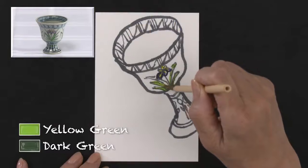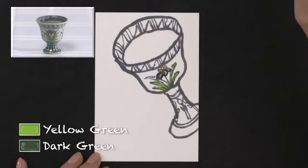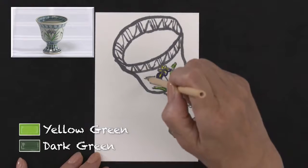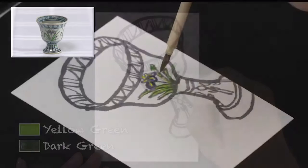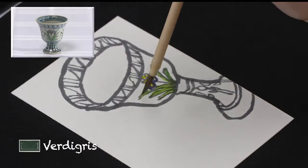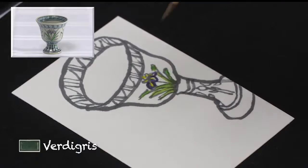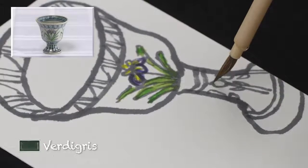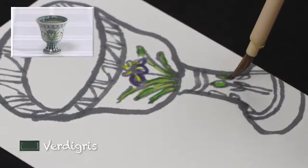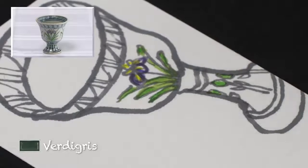The leaves will be a mix of yellow-green and a bit of dark green. We'll apply thick verdigris on top. For the pattern on the lower part of the cup, use the thin brush.